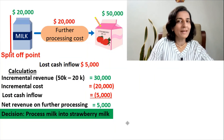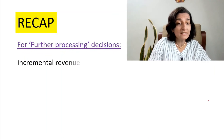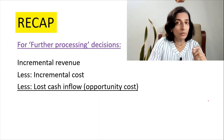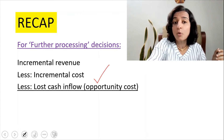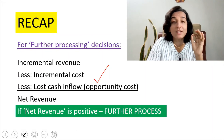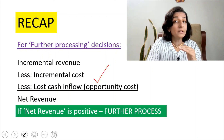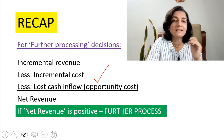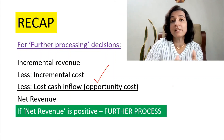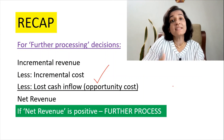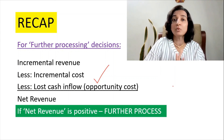Let's have a quick recap. For further processing decisions, first consider the incremental revenue. From the incremental revenue, reduce the incremental cost. Further reduce any lost cash inflow — another word for lost cash inflow is opportunity cost. This gives you the net revenue. If net revenue is positive, you should further process. If it is negative, you should not further process, and the product has to be sold at the split-off point. Note that the rules applying to joint products further processing decisions are applicable for any product — even if it is not a joint product, the same rules apply.